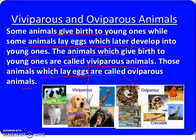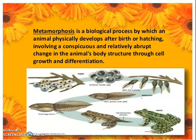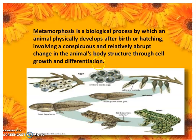So these animals — such as birds, fish, and frogs — are all oviparous animals.